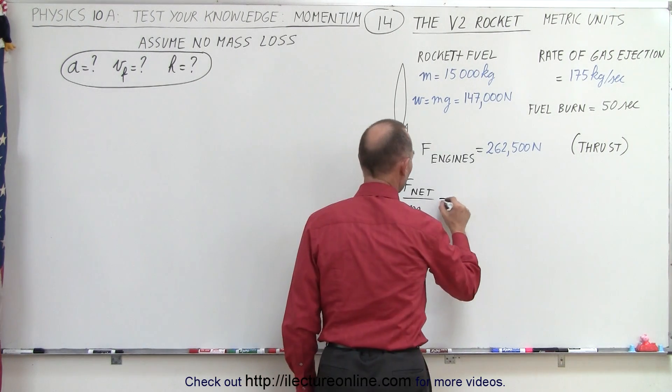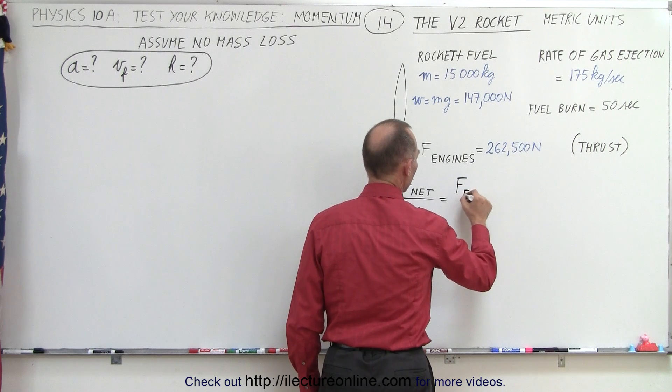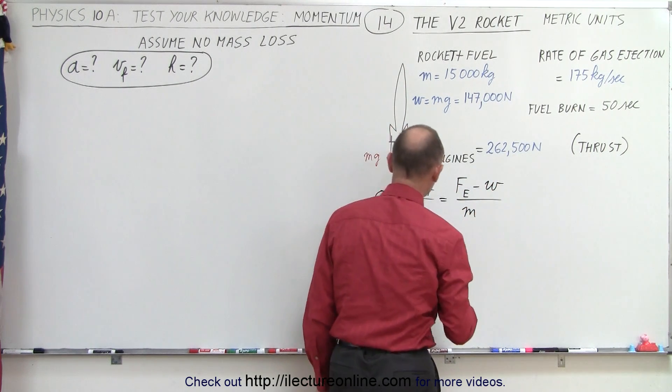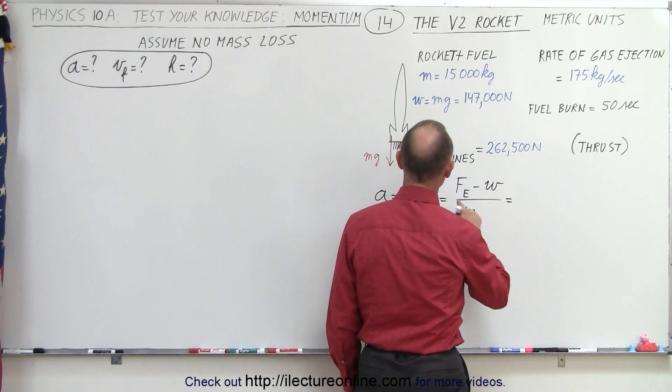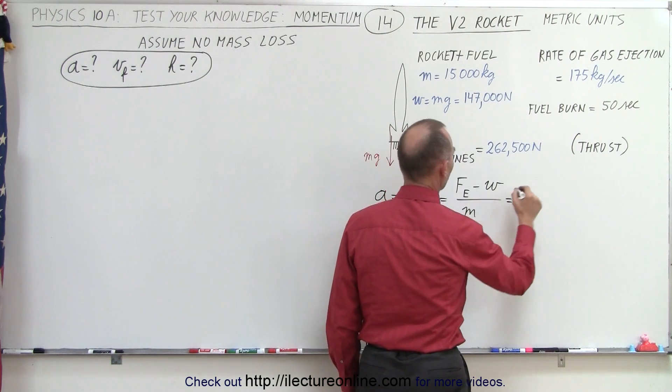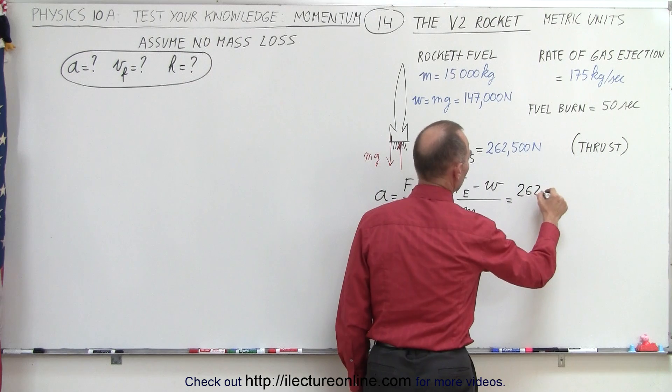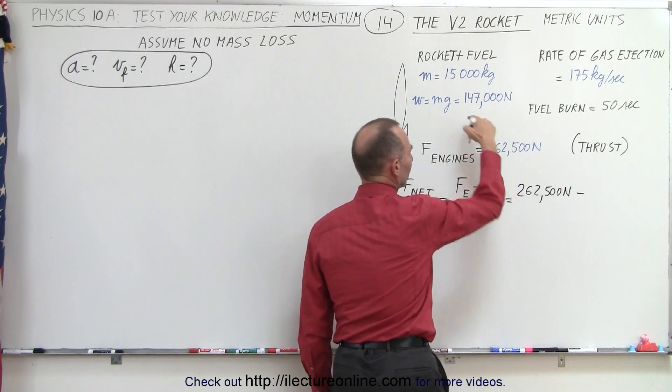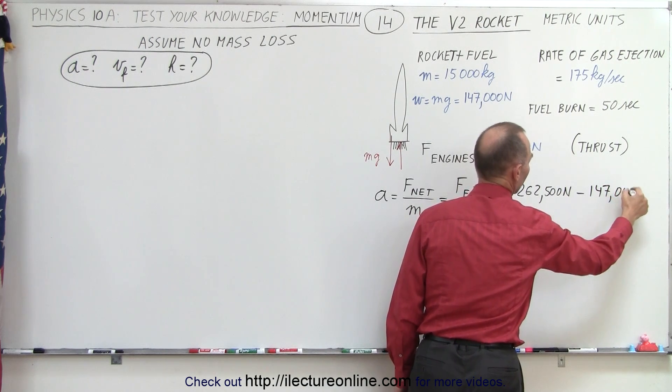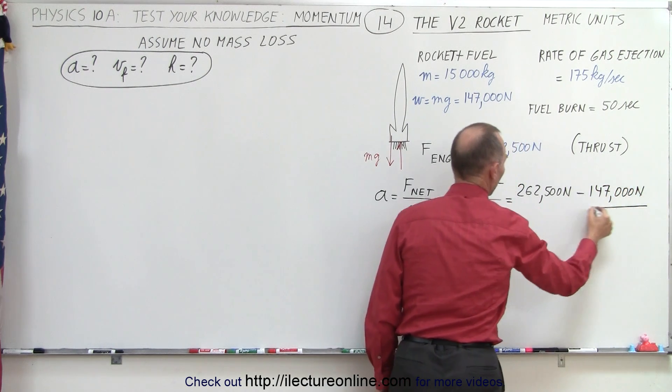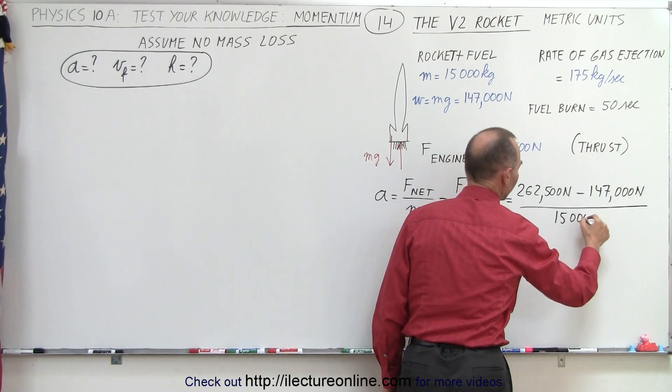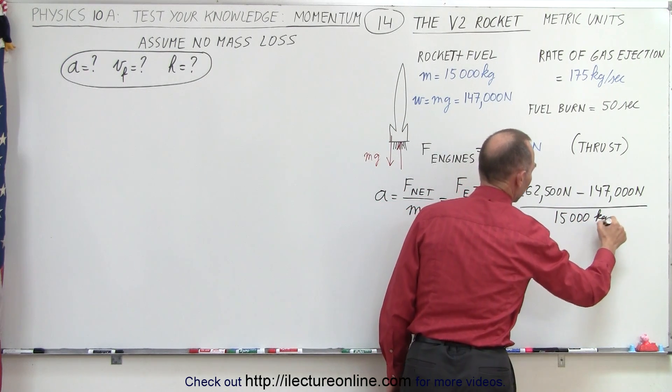So the net force is going to be the force of the engines minus the weight of the rocket divided by the mass, and so this will be equal to, the engines will provide a force of 262,500 newtons. We subtract from that the weight of the rocket, which is 147,000 newtons, and we take the whole thing and divide it by the mass of the rocket, assuming it remains constant of 15,000 kilograms.